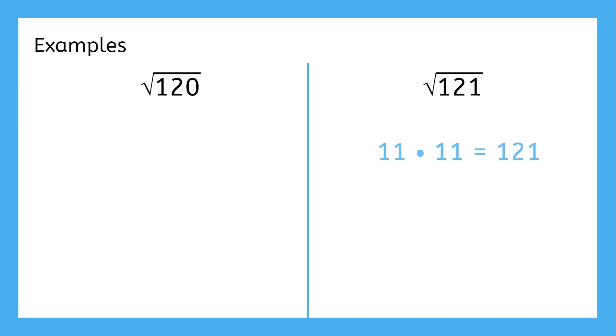So then the square root of 121 is 11, an integer, so the square root of 121 is rational.